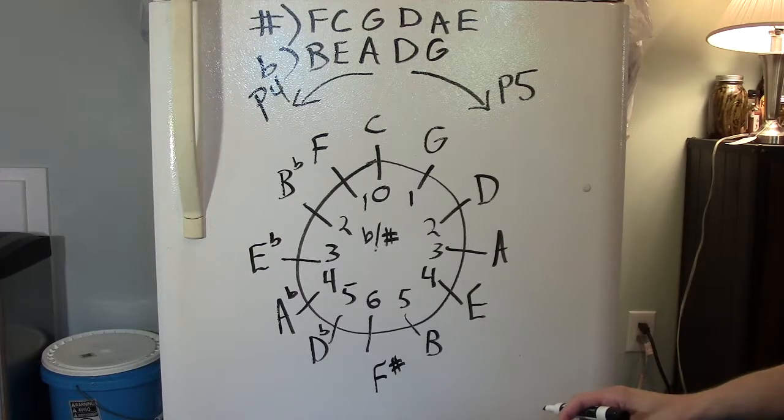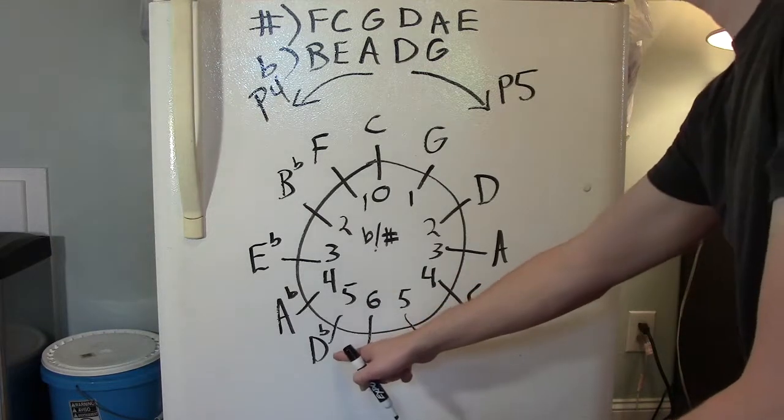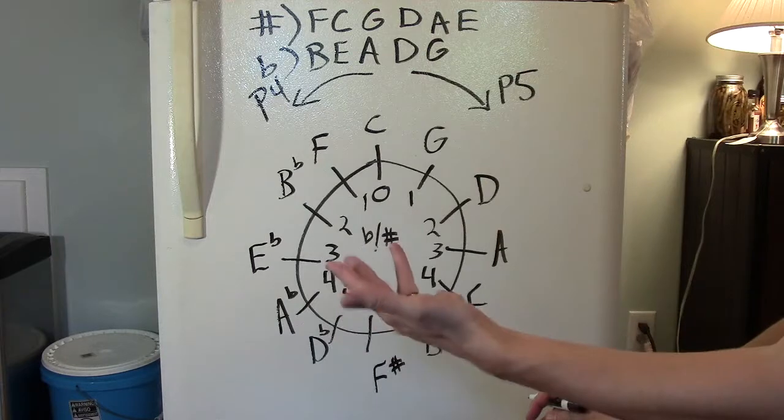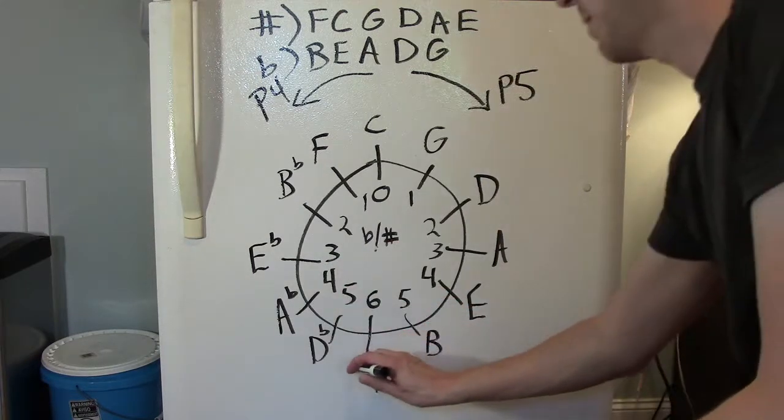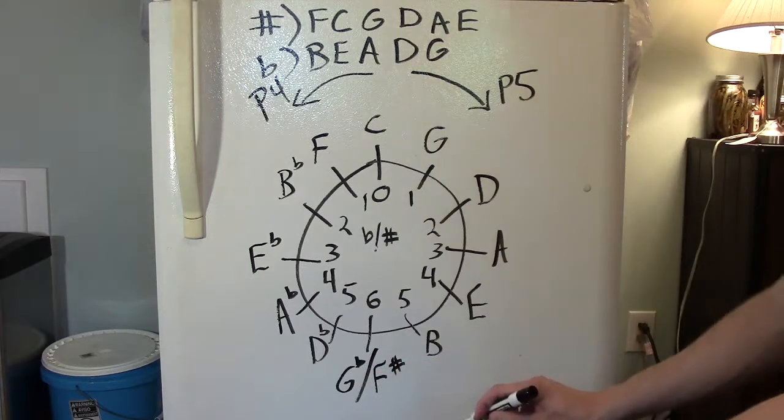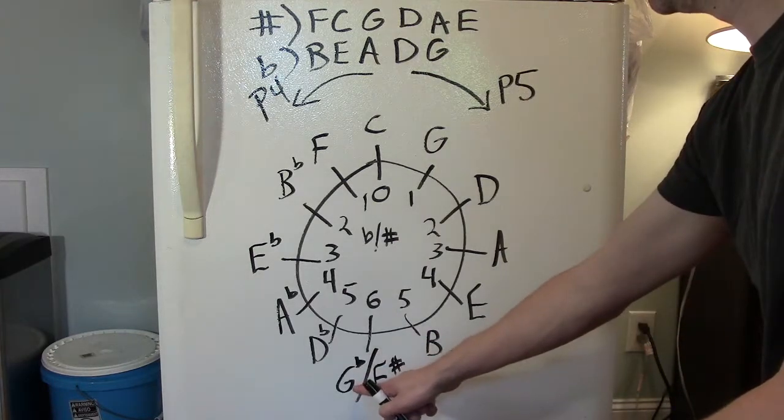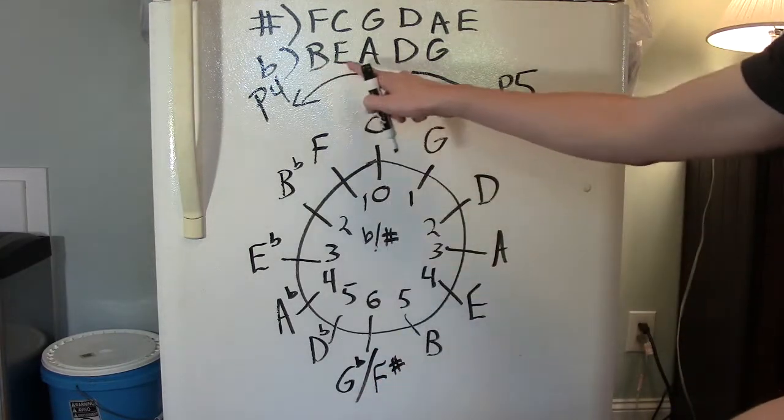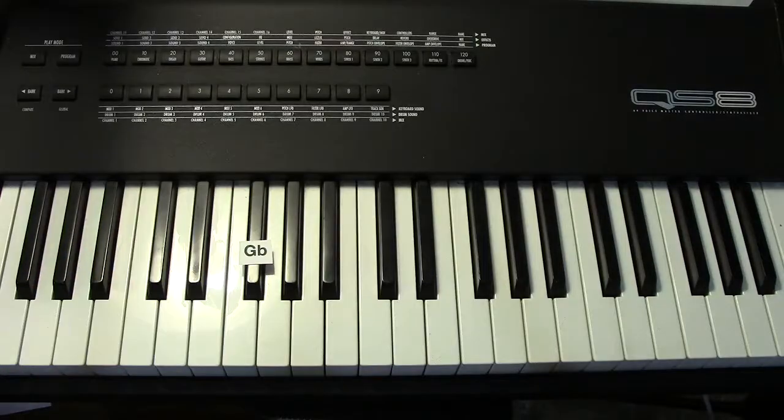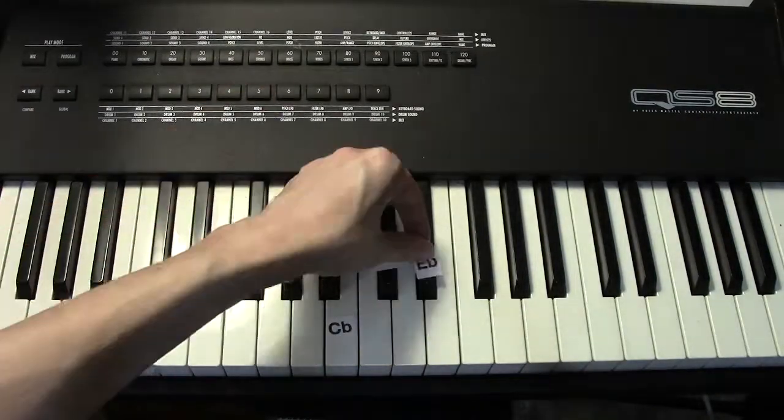One last perfect fourth to travel. Let's start on that D flat. One, two, three, four. We arrive at the enharmonic spelling of F sharp, G flat major. G flat major has six flats in it, and they are B, E, A, D, G, and C. G flat, A flat, B flat, C flat, D flat, E flat.